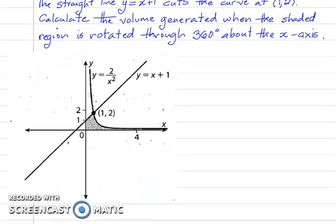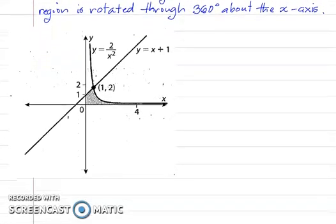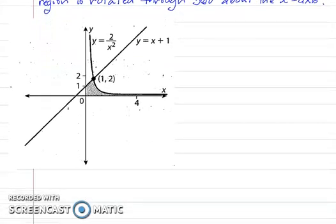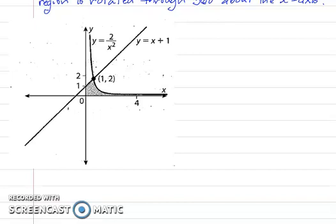The very first thing to note with this example is that the area being rotated is not the area between two curves. The area is more a composite of the area under two different curves. So we can literally divide the area into two pieces.